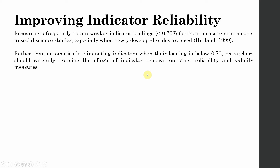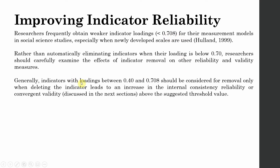You do not simply remove your indicators because their loading was less than 0.70. You assess whether this removal will significantly improve the reliability and validity. If your reliability and validity is already above the required limit, you do not need to delete an indicator just because its loading was less than 0.708.